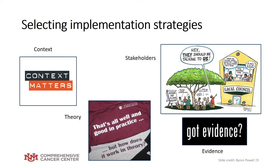Given these extensive lists of strategies generated through the ERIC study, how would you consider selecting implementation strategies within your research projects? It's always a good idea to justify selection based on context, doing a specific needs assessment and understanding your context details. You could also use theory to guide which strategies might be important — there are 150 or more theories in implementation science. You could engage stakeholders to think about preferred strategies, and consider what practical and empirical evidence could help inform which strategies should be selected.